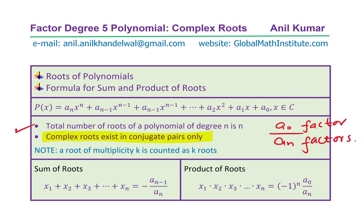The sum of all roots equals -aₙ₋₁ / aₙ, where aₙ is the leading coefficient. The product of roots is always the ratio of the constant term over the leading coefficient — negative if the degree is odd, positive if the degree is even. These rules are helpful in solving such questions.